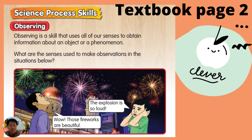Look at this picture. What are the senses used to make observations in this situation? The boy in a purple shirt said, 'Wow, the fireworks are beautiful.' So how can he know the fireworks are beautiful? He used the sense of sight — he used his eyes. Then the boy in a green shirt said, 'The explosion is loud.' How can he know that? Because he used the sense of hearing — he is hearing using his ears.